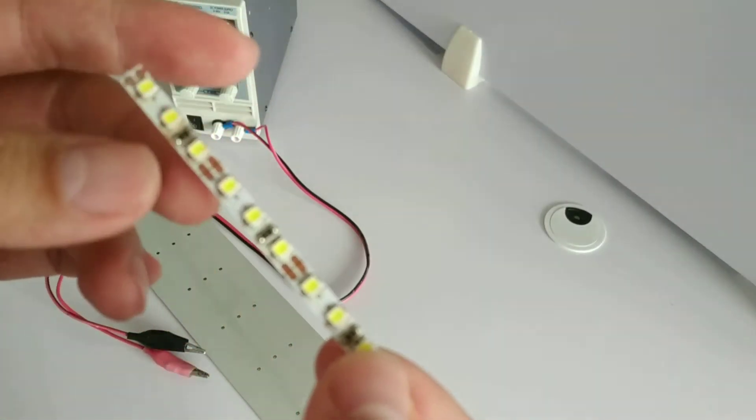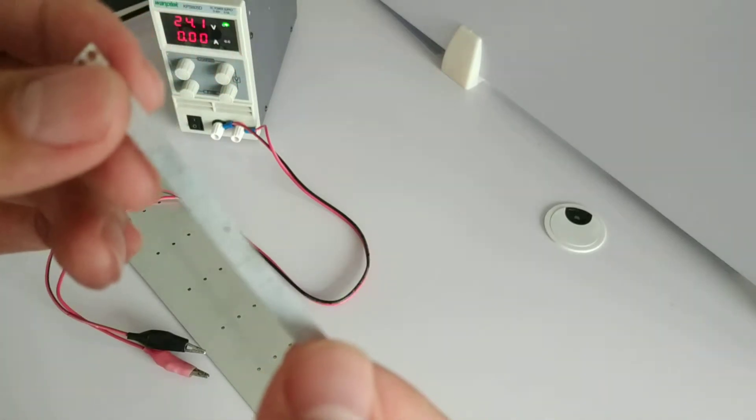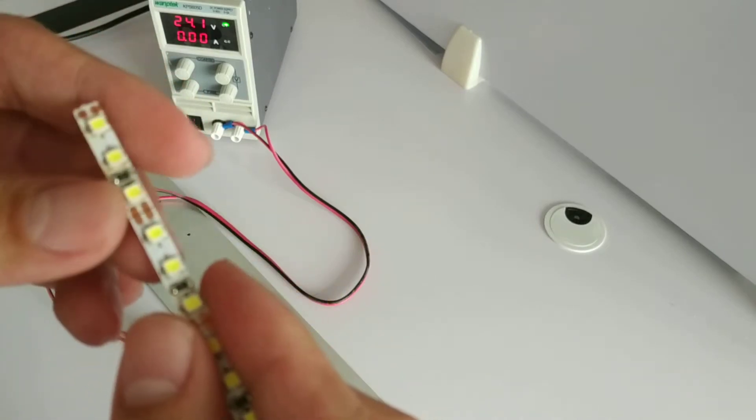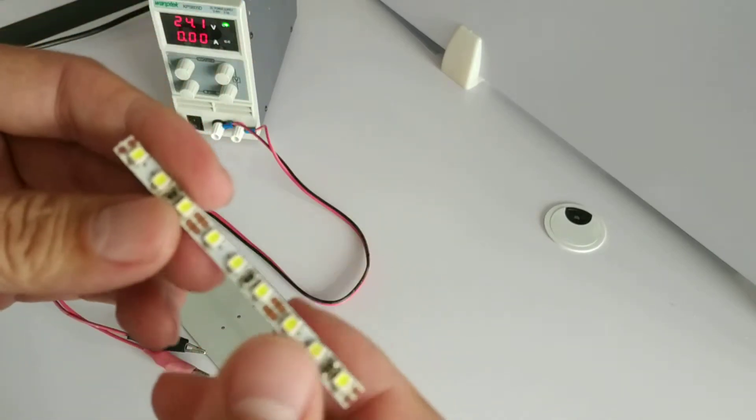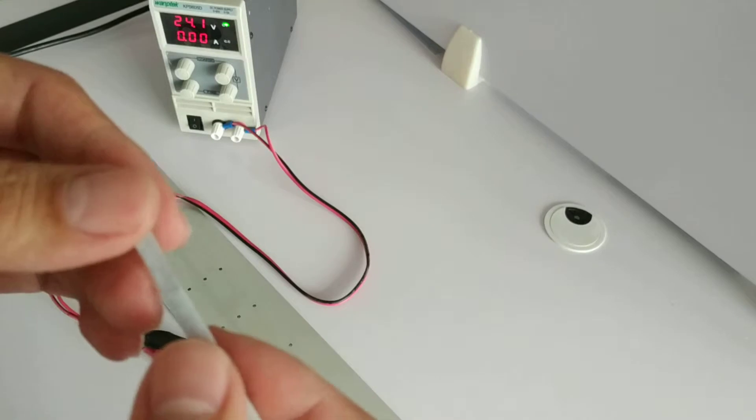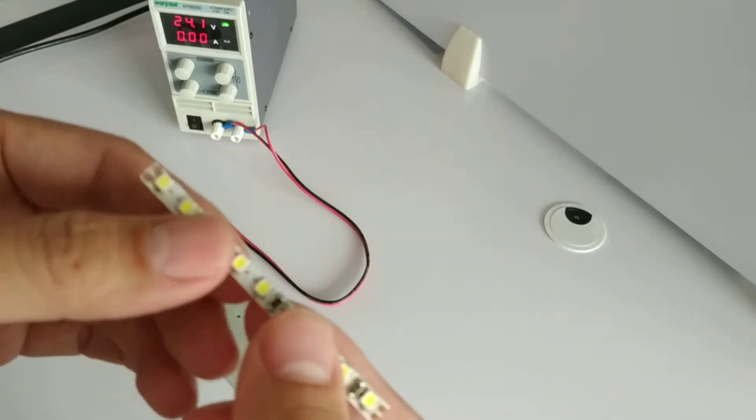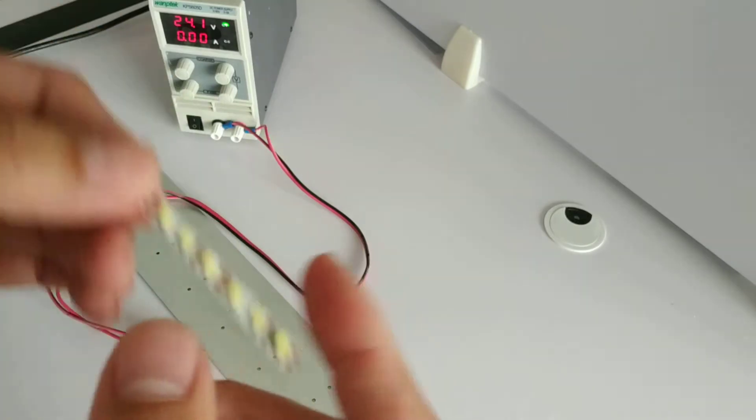But if the worker connects to DC 24, what happens? It's dangerous, but I don't want you to test by yourself. We can test here.